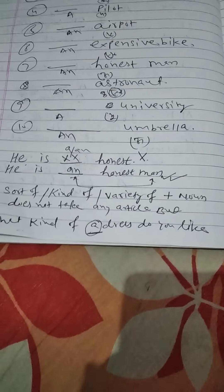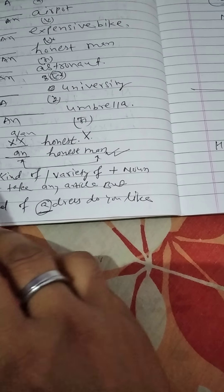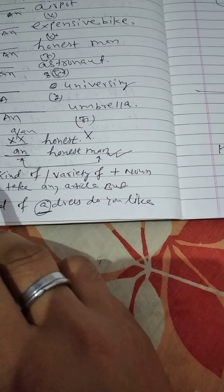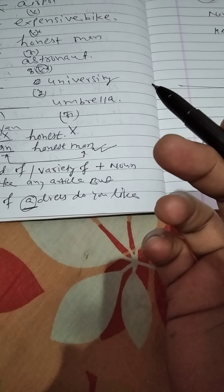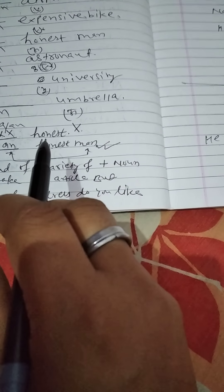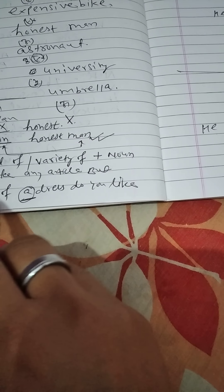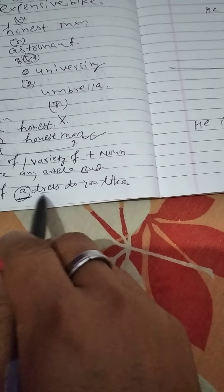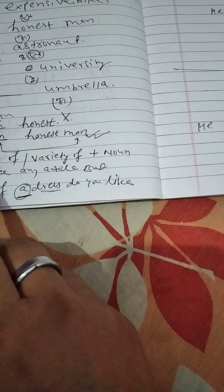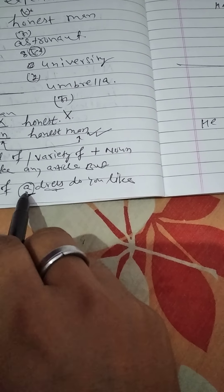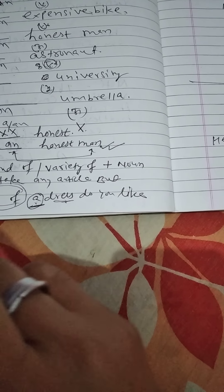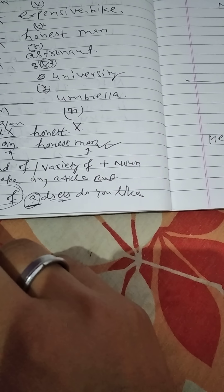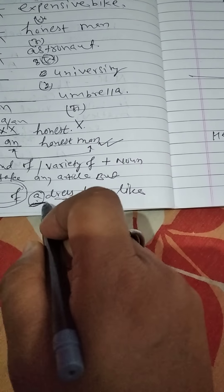There are some words like 'sort of,' 'kind of,' and 'variety of' — these words never take any article in a regular sentence. For example: 'I want any kind of goods,' 'I want any variety of things.' But if these words are used in a question, then we use an article before the noun: 'What kind of a dress?' However, in a simple sentence like 'I like this kind of dress,' we don't use any article.